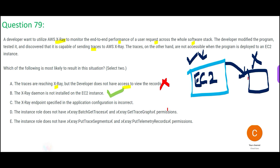Option C says the X-Ray endpoint specified in the application is incorrect. If the endpoint in the code configuration is wrong, the application would throw a big error rather than simply showing traces as inaccessible. So this is unlikely to be the correct answer.